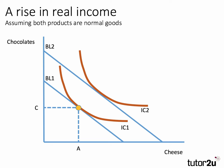IC2 of course is preferred to IC1 — it gives a higher total satisfaction. The new equilibrium tangency point allows the consumer to purchase D quantity of chocolates and B quantity of cheese. In our example, they're buying more of both products when income goes up, which tells us that both products are normal goods.